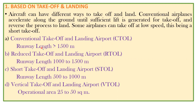We will see what a runway is in the upcoming lectures. Here the runway length is greater than 1500 meters, then we call this a conventional takeoff and landing airport. Next is a reduced takeoff and landing airport, denoted as RTOL, where the runway length is from 1000 to 1500 meters. Then we have a short takeoff and landing airport, denoted STOL, where the runway length is from 500 to 1000 meters. The last one is a vertical takeoff and landing airport, denoted VTOL, where the operational area is usually 25 to 50 square meters.